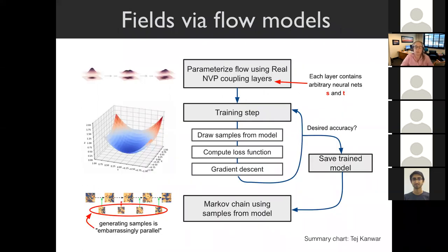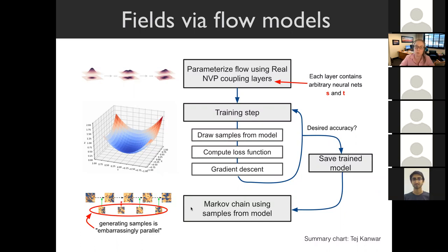The process: we parameterize the change of variables using coupling layers—the real non-volume preserving layers where each layer has arbitrary neural networks doing the scaling and shift transformations, giving many free parameters. Training is done by drawing samples from the model, computing the loss, doing gradient descent, and iterating until some stopping criterion, such as desired accuracy. Then we save the trained model and sample from it, composing into a Markov chain with accept-reject to get the right asymptotic probability distribution.